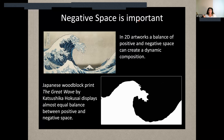In 2D artwork, a balance of positive and negative space can create a dynamic, pleasing composition. Let's take a look at this Japanese woodblock print called The Great Wave. If we took out all the details and created just a silhouette contour line of this great wave, we can see that Hokusai displays an almost equal balance between the positive area he drew and the negative background space. It's amazing that when you strip away the details you can see that balance.